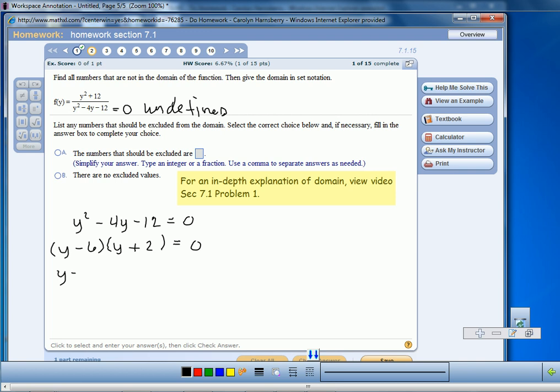Then we write our two equations, Y minus 6 equals zero or Y plus 2 equals zero.